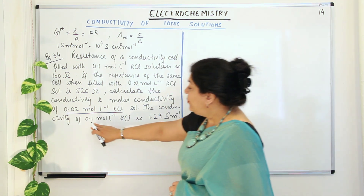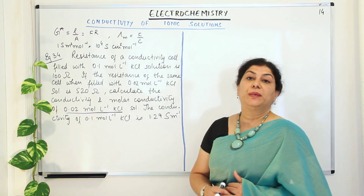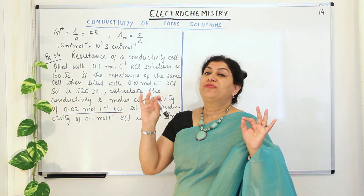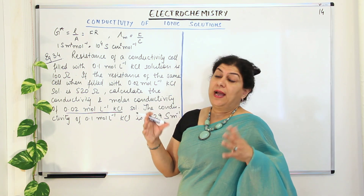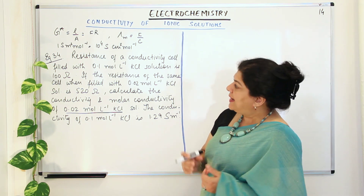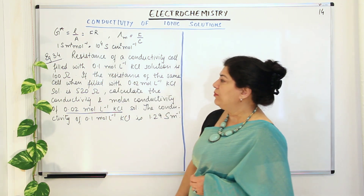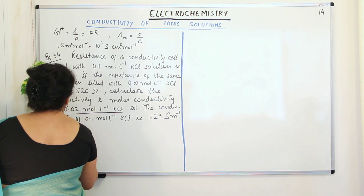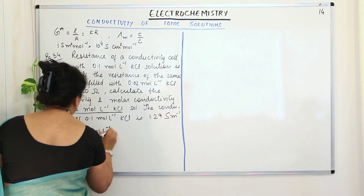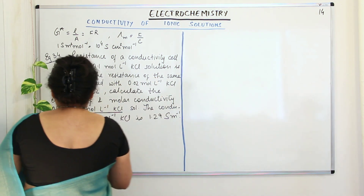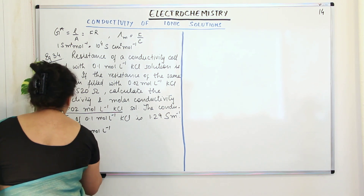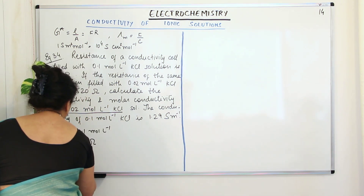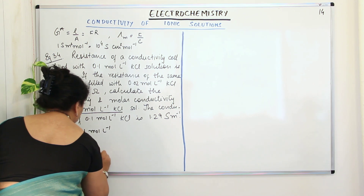The conductivity of 0.1 mol per liter KCl is 1.29 Siemens per meter. We have two different concentrations, resistances, and conductivities. Let C1 = 0.1 mol per liter, R1 = 100 ohms, and kappa 1 = 1.29 Siemens per meter.